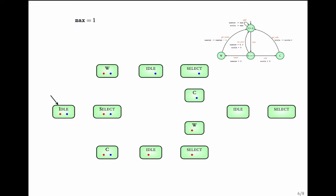Now let us look at the transitions. When a coin is inserted, the program graph goes from idle to select with no changes to the variables. In the transition system, there is therefore a transition from idle to select with no change to the variables. From select, there is a transition to w on water, which is possible provided the value of n_water is bigger than 0. Since n_water is 1, this transition is possible and does not change the values of the variables.